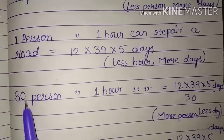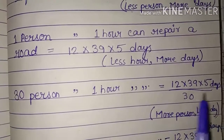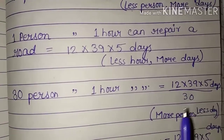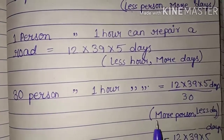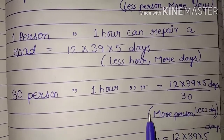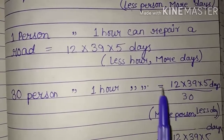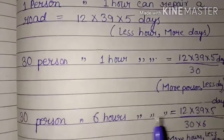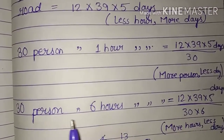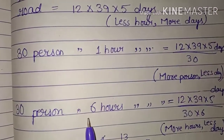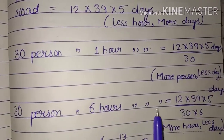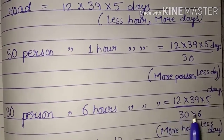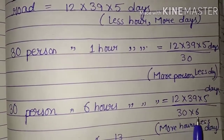When we increase the number of workers, the work will be completed in fewer days — more persons, less days. So 30 workers working 6 hours per day will complete the work in 12 × 39 × 5 divided by 30 × 6 days.